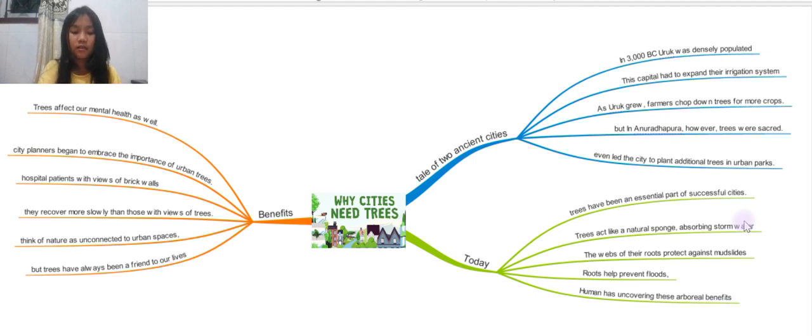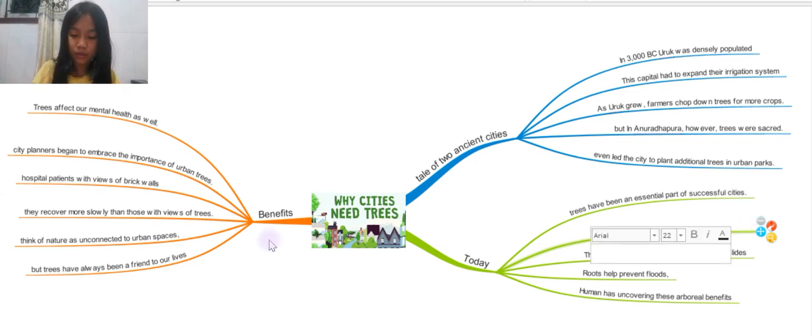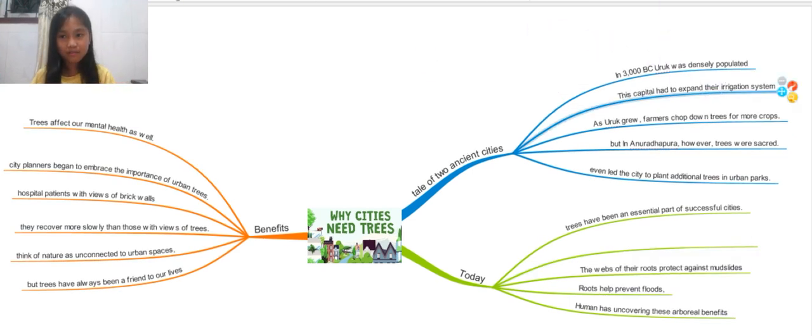And the same thing happens to those trees. Those trees also act like this sponge. They don't make all those waters come out at all. But the water starts to come in and act. It's really cool. Let's come back. No more of those. That's going to be really dangerous if I pour any water on my laptop. Next, the webs of their roots protect against mudslides. It helps prevent floods. Yes, act like a natural sponge, helps prevent floods.